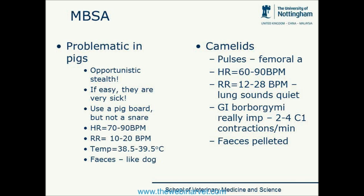Moving on to camelids — in the UK, camelids are generally relatively well handled. Normal heart rate is 60 to 90, respiratory rate 12 to 28, and they normally have pretty quiet lung sounds. Although they're not ruminants, they have compartments instead of a rumen, and a large amount of their GI tract is forestomach. Listening to their gastrointestinal borborygmi on a major body system assessment is important — on the left-hand side you should hear and feel two to four contractions per minute. They should have pelleted feces like you would expect in sheep and deer.